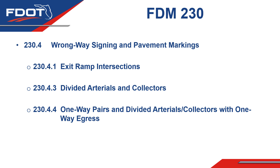Wrong way signing and pavement marking changes include the following. In section 230.4.1, exit ramp intersections, guidance was added to coordinate with the DTOE when contemplating use of wrong way detection systems and LED highlighted wrong way signs. In section 230.4.3, divided arterials and collectors, and section 230.4.4, one-way pairs and divided arterials and collectors with one-way egress, clarification was given indicating that wrong way signing and marking requirements apply to signalized, unsignalized, and stop control connections.